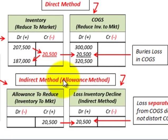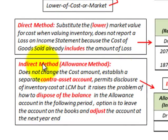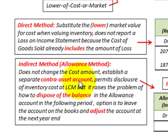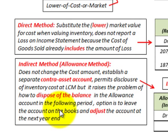Now let's look at the indirect method or the allowance method. The allowance method does not change the cost amount. You establish a separate contra asset account, which permits disclosure of inventory cost at the lower of cost or market. However, it raises the problem of how to dispose of the balance in the allowance account in the following period. The option is to leave the account on the books and adjust it at the next year end.